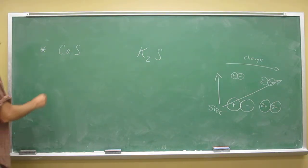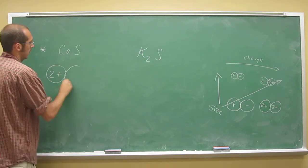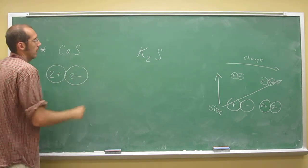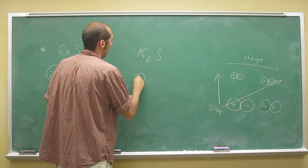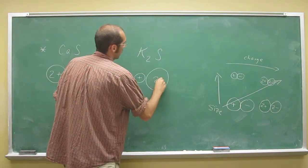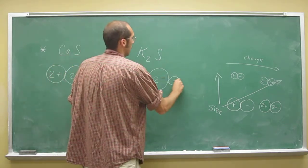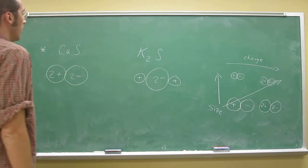Why is that? Because we've got a 2 plus here and a 2 minus. And here we've got just a plus and a 2 minus. So in fact, if you want to look at it, it's like that.